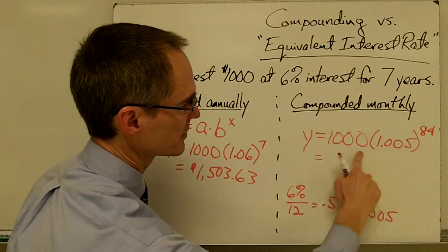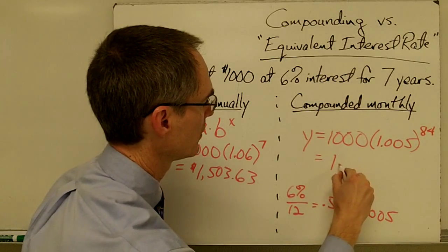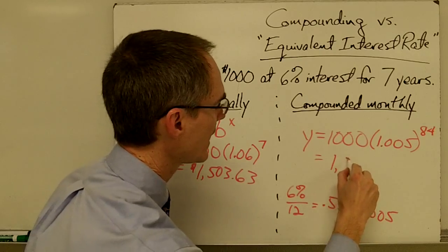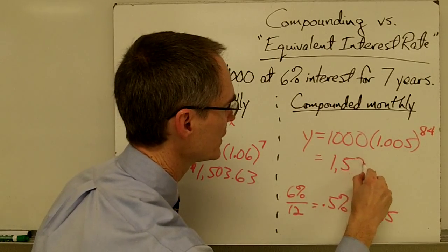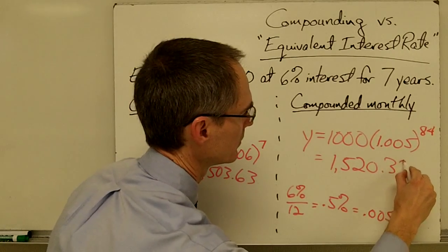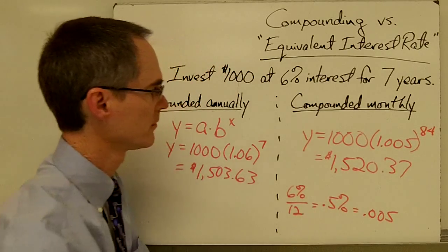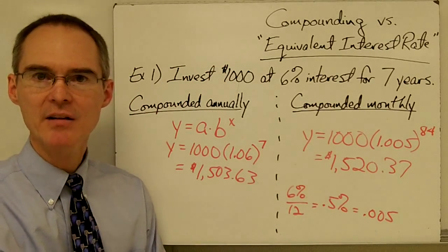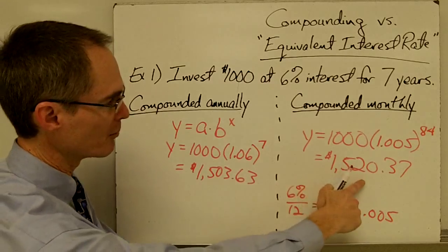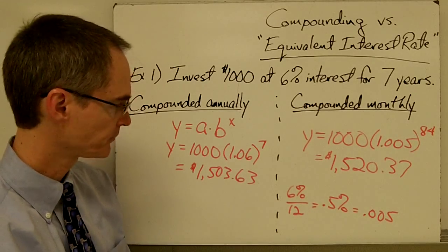If I compound monthly and punch this into my calculator, I get $1,520.37. So compounding monthly — calculating interest more often — gives me a little bit more money than compounding annually.